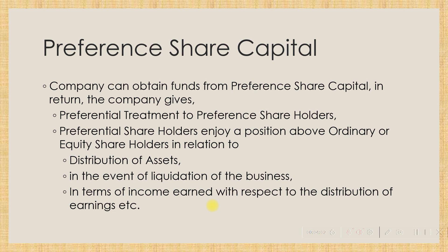Whenever the company goes into liquidation, preferential shareholders get a position above ordinary shareholders — they get paid before an ordinary or equity shareholder. Also in terms of income earned with respect to distribution of earnings, preference share capital holders enjoy a position above ordinary shareholders. We'll explain more on this in a separate session on preferential share capital under the hybrid securities section.